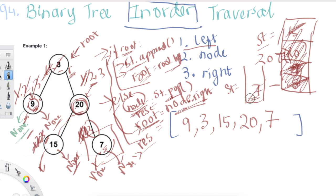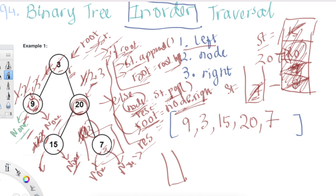We've already popped 7, and root is None, so the stack is now empty. We need to put all of this in a while loop to check if the stack is empty or not, and also check if root is present. When both conditions are no longer met — stack is empty and root is None — we exit the while loop and return our result list res.